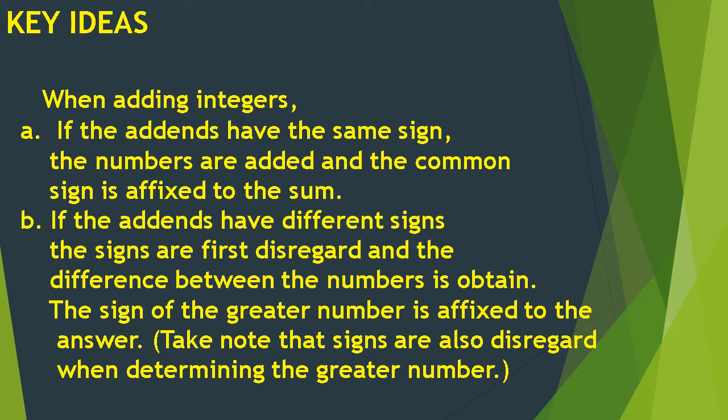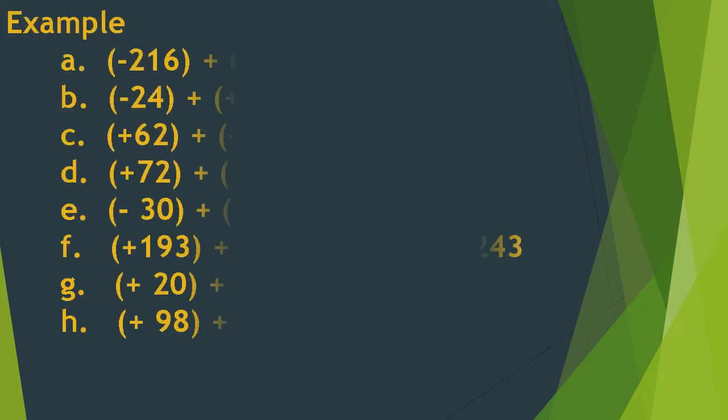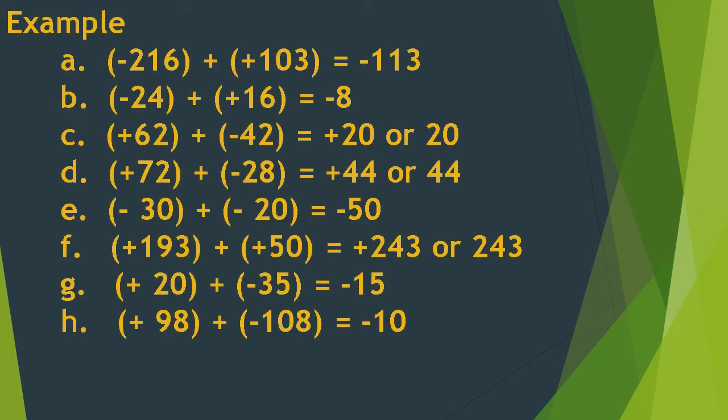Key ideas with adding integers: Letter A — if the addends have the same sign, the numbers are added and the common sign is affixed to the sum. Letter B — if the addends have different signs, the signs are first disregarded and the difference between the numbers is obtained. The sign of the greater number is affixed to the answer. Take note that signs are also disregarded when determining the greater number.